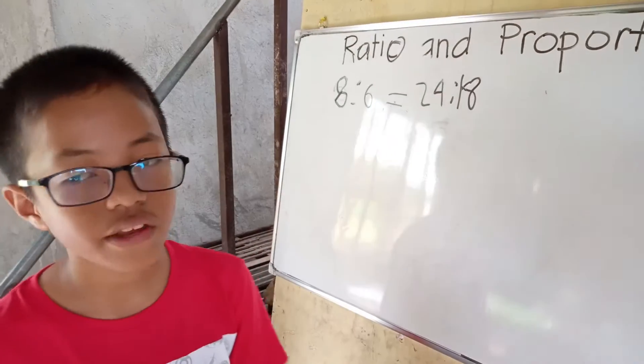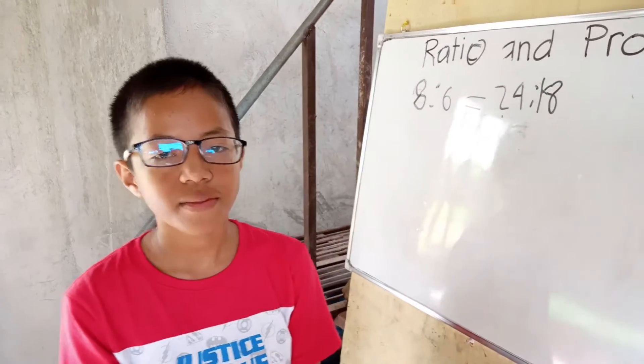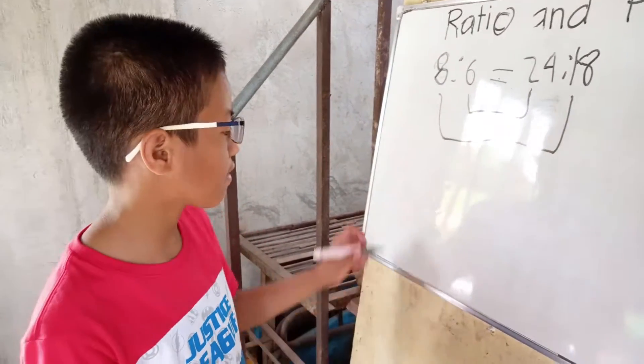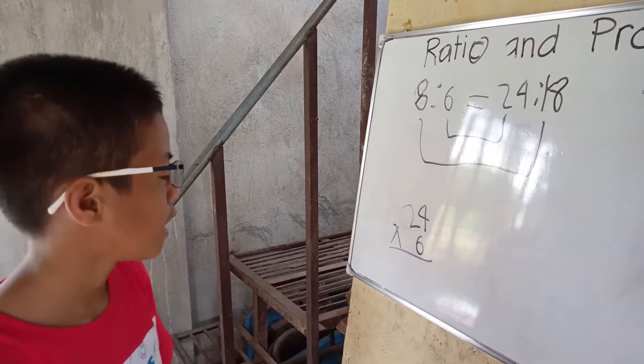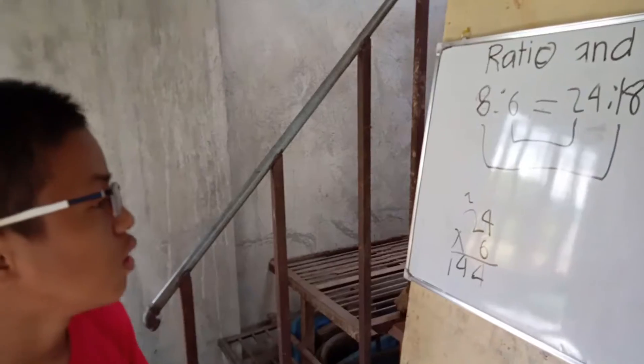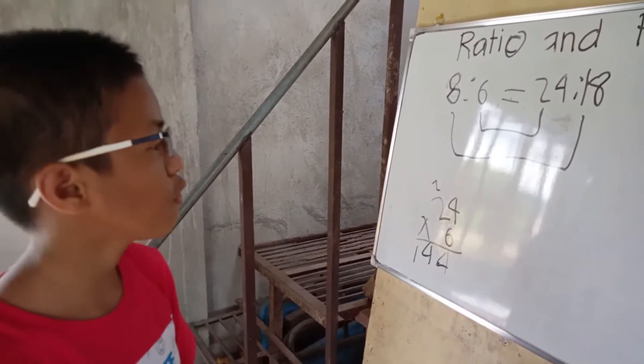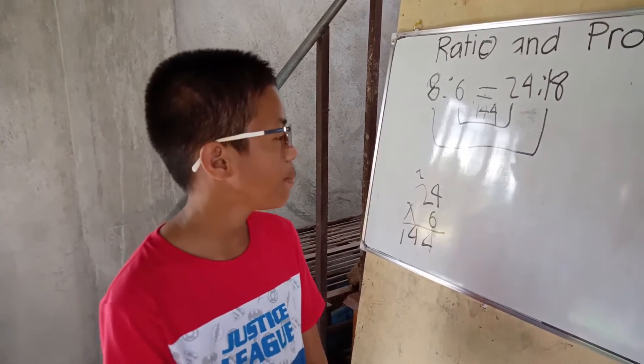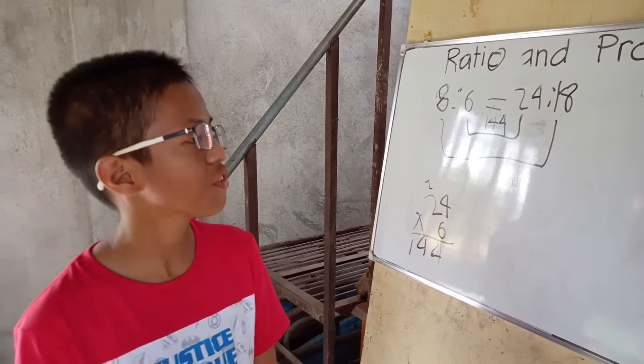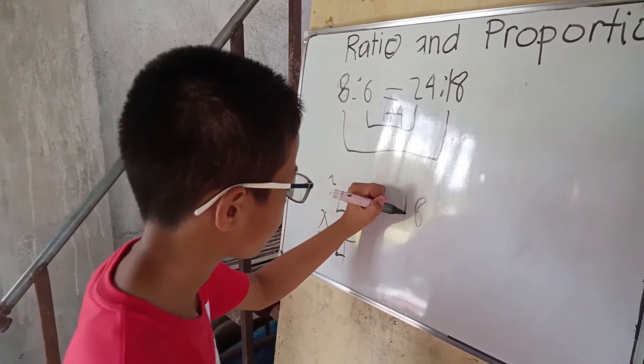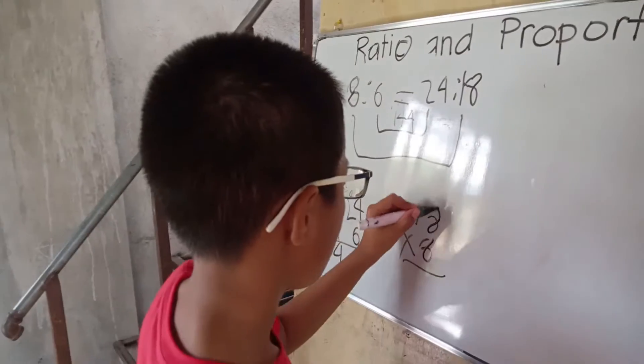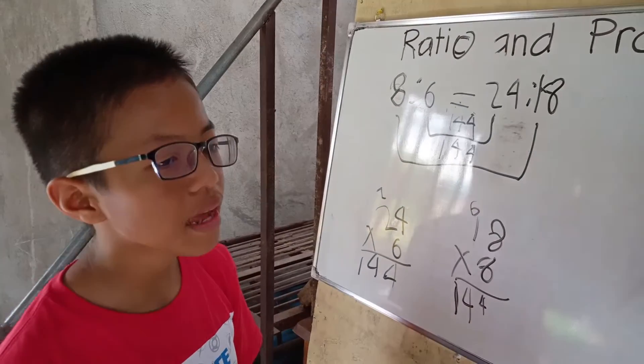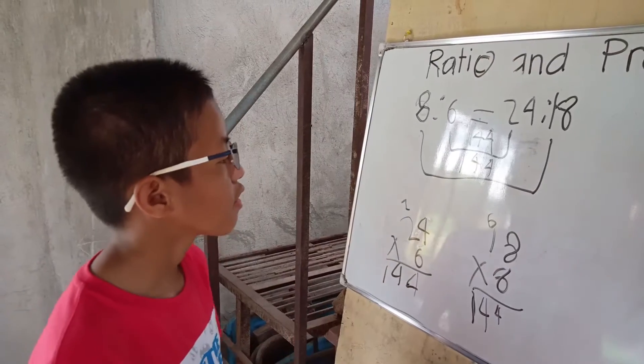How do you know if two ratios are proportion? You just multiply the means and extremes. These are the means and these are the extremes. So 24 times 6, 6 times 4 is 24. So the product of the means is 144. And if the product of the means and the extremes are equal to each other, they are the proportion. So 18 times 8, 8 times 1 is 8 plus 6 is 14. So the product of the means and the extremes are equal. So they are the proportion.